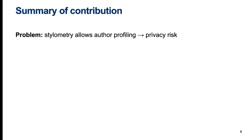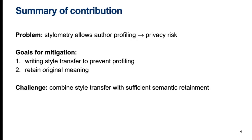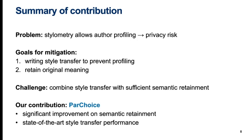Natural language processing techniques allow the de-anonymization or profiling of anonymous authors. This is called stylometry. To defend against profiling, the author can perform style transfer. There are two main goals: first, preventing profiling, and secondly, retaining the original semantic interpretation of the text. We show that prior approaches mostly fail at combining these two requirements. We propose a new style transfer technique called ParChoice which markedly improves over baselines in semantic retainment while at the same time retaining good style transfer performance.